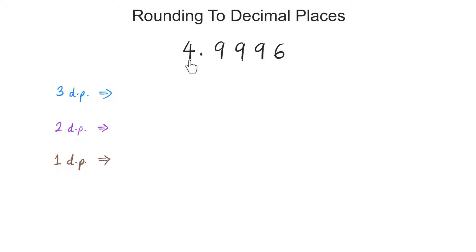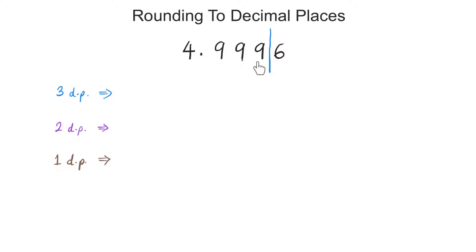Here we are being asked to round 4.9996 to three decimal places. Again, three decimal places, so from the decimal point: one, two, three. I need to place the line over here. What comes after the line? After the line there's a 6, so 5 or more, raise the score — we need to round up. Imagine this as a whole number, 4,999. What comes after 4,999? It is 5,000, so this becomes 5.000.